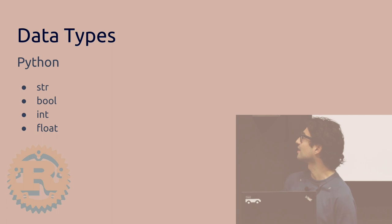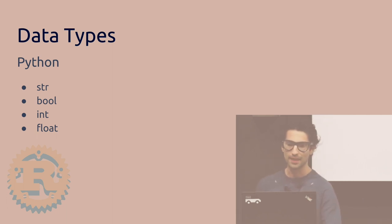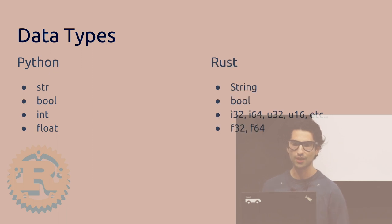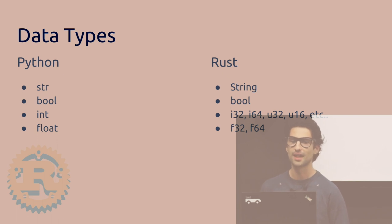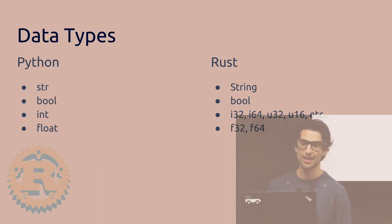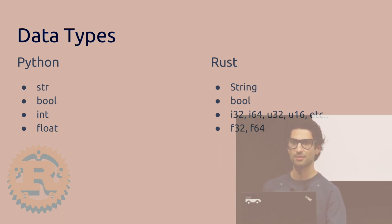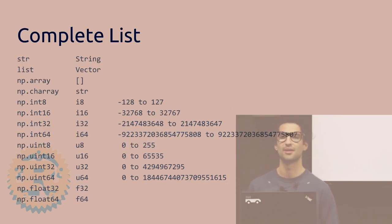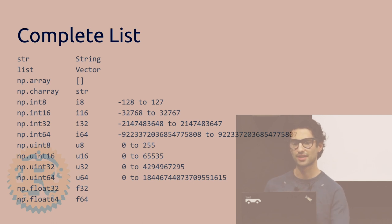The data types in Python are string, bool, int, and float. In Rust, you have String with a capital S; bool is the same. For int and float, you have to specify whether it's signed or unsigned — meaning positive or negative — and also the size, which determines the maximum and minimum values. This slide shows a complete mapping from NumPy types to Rust types.